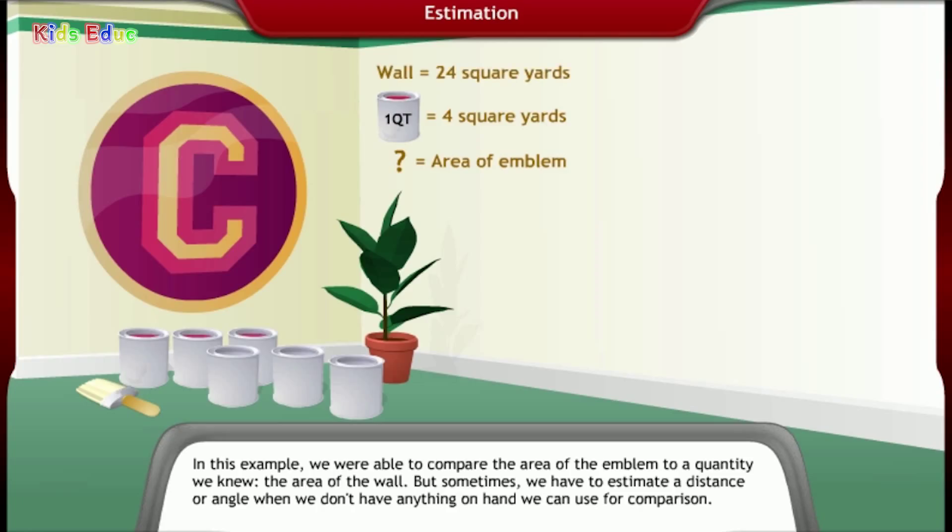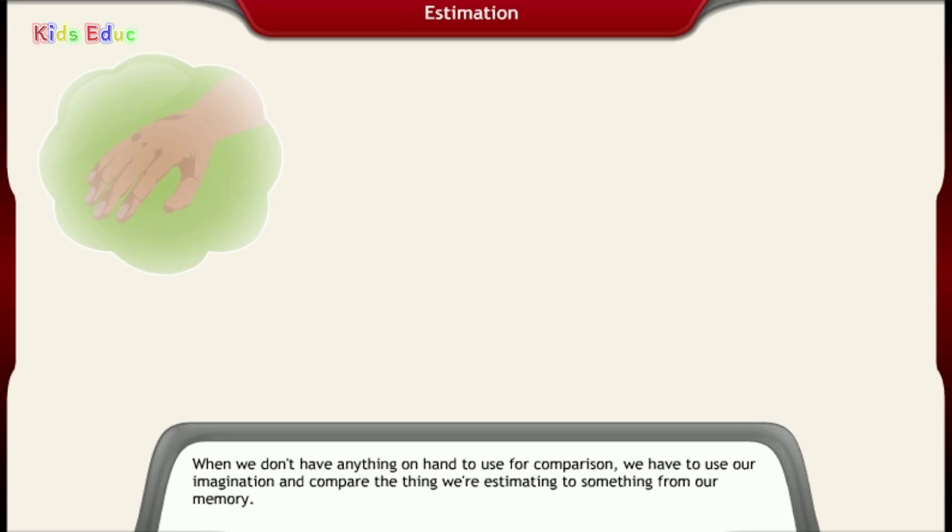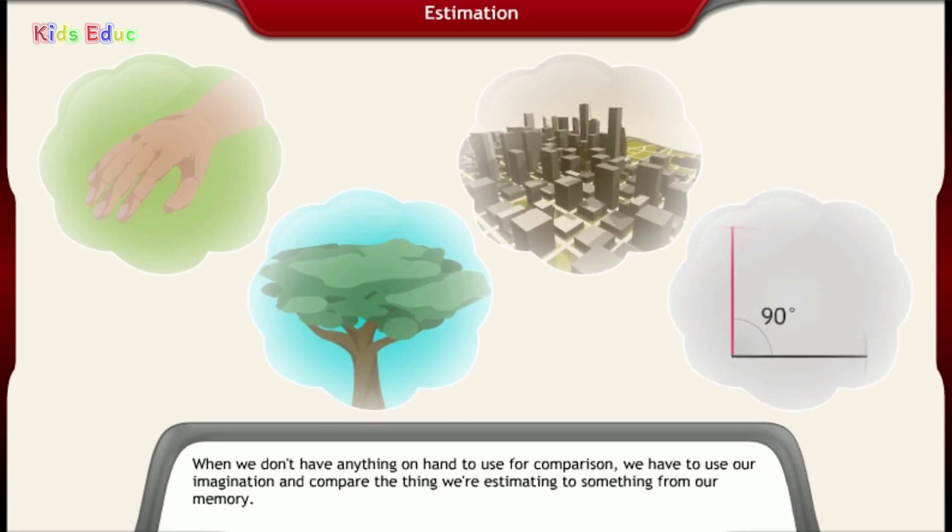But sometimes, we have to estimate a distance or angle when we don't have anything on hand we can use for comparison. When we don't have anything on hand to use for comparison, we have to use our imagination and compare the thing we're estimating to something from our memory.